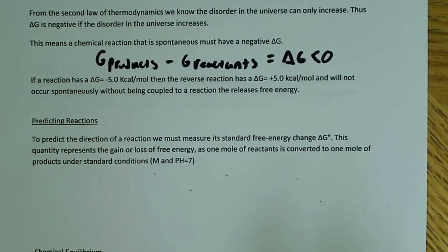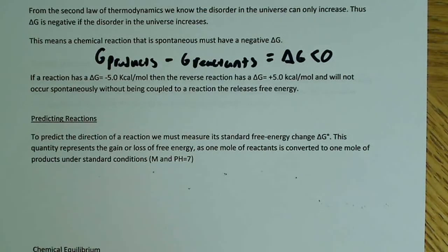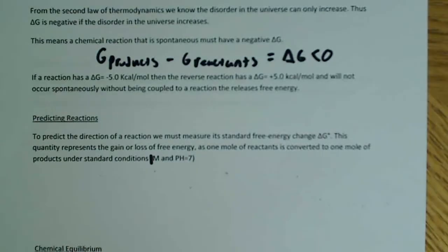To predict which direction a reaction will go, we must measure its standard free energy change — delta G with a zero or degree symbol. This is not the same as delta G. It represents a gain or loss of free energy as one mole of reactants is converted to one mole of products under standard conditions: one molar concentrations and pH equal to seven.